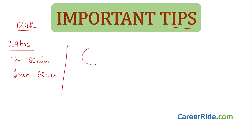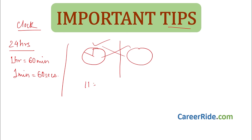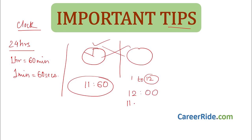Sometimes they give you a clock placed in front of a mirror and ask what time will be shown in the mirror. If you try to calculate through image methods, it takes too long. The easy trick: whatever time is given, just subtract it from 1160. Why 1160? Because in a clock, the maximum time is 12 o'clock, which equals 11 hours plus 60 minutes, so remember 1160. Subtract any given time from 1160 to get the mirror time.